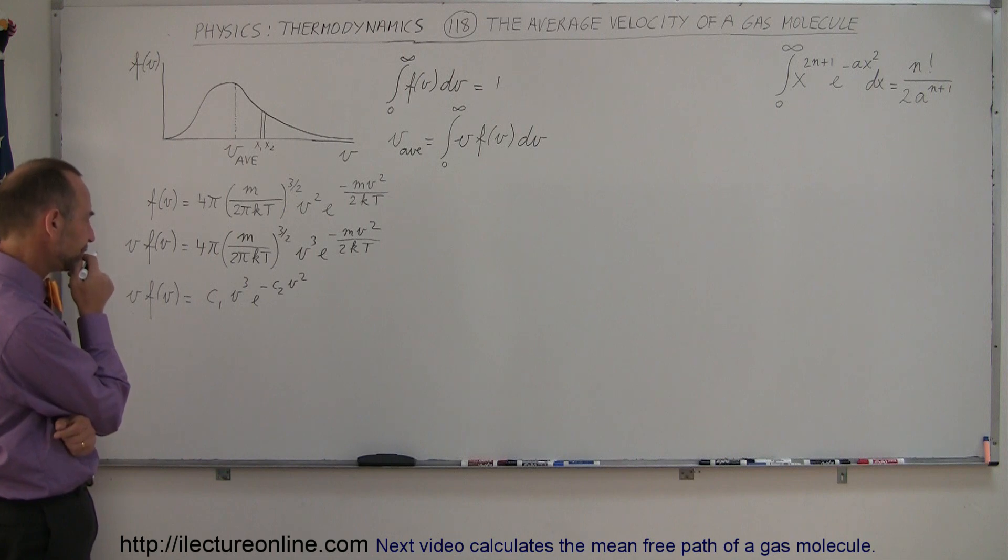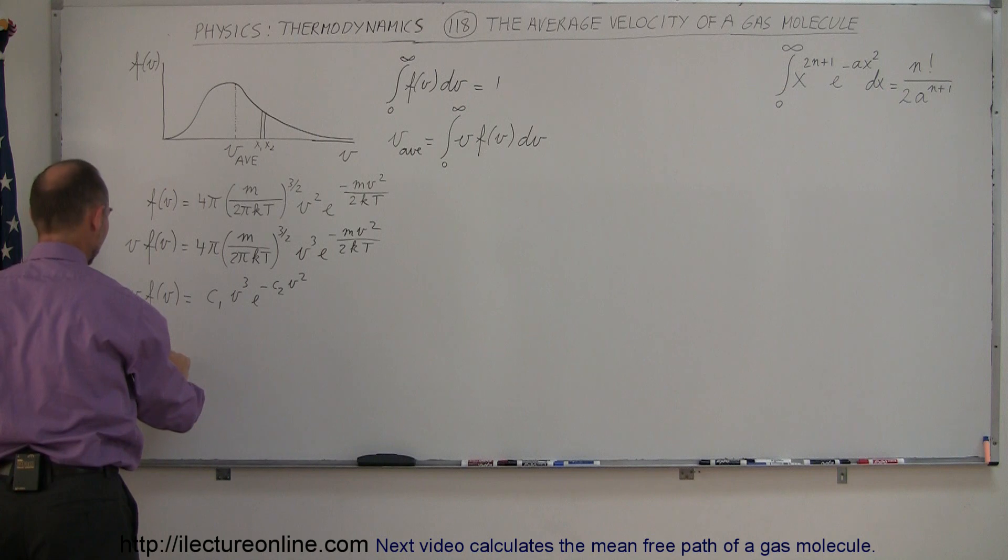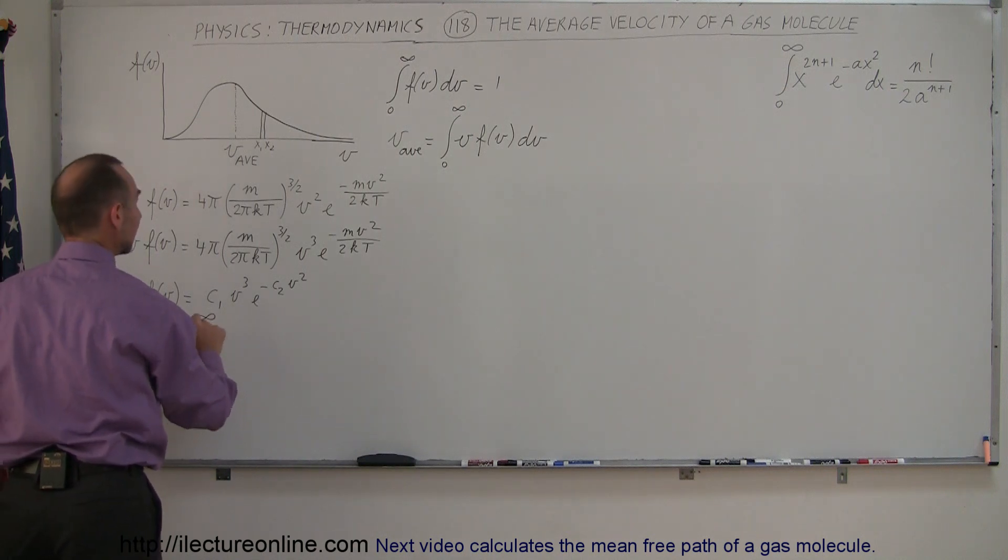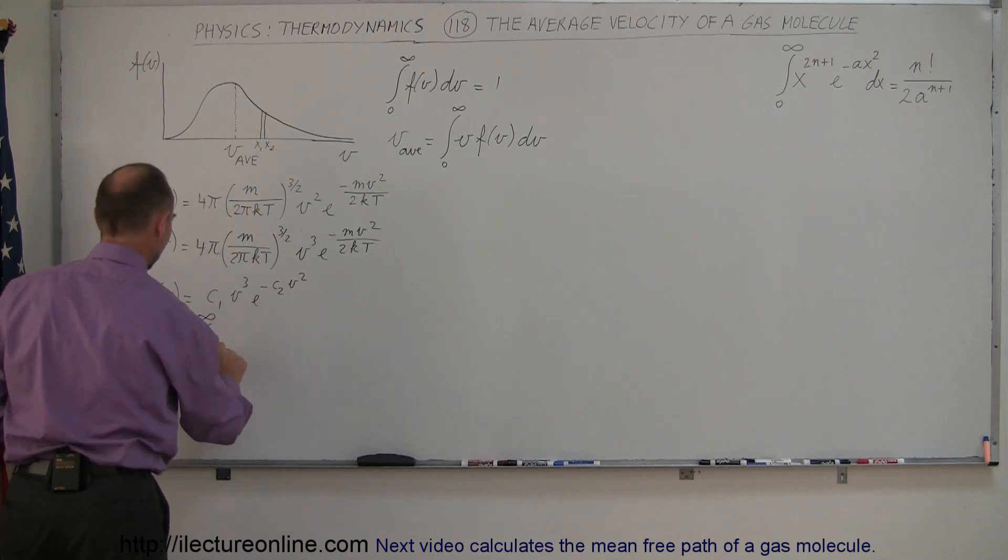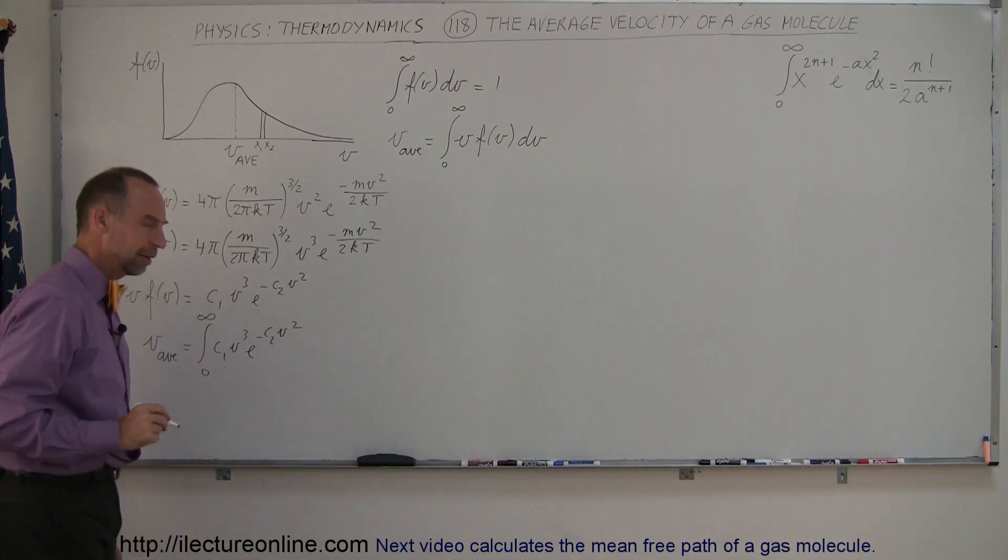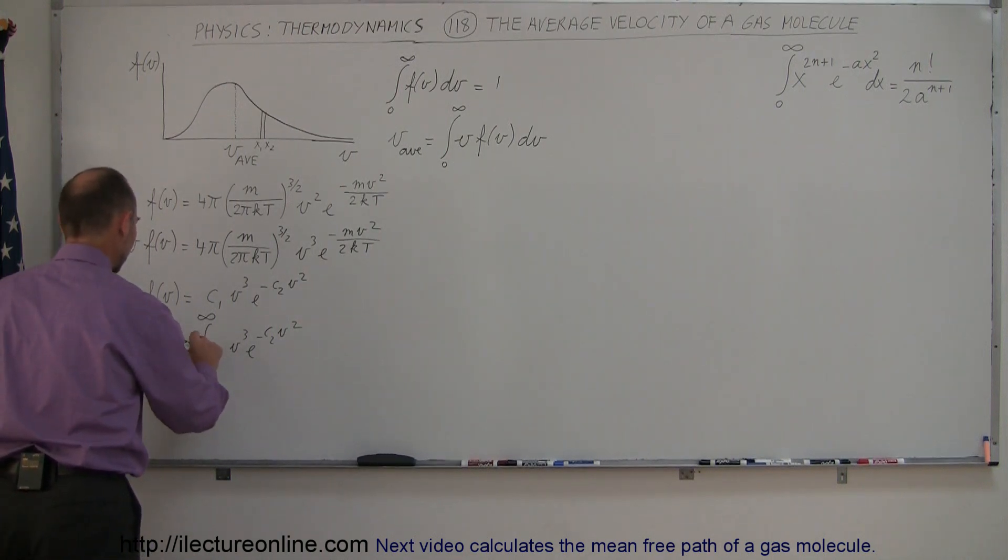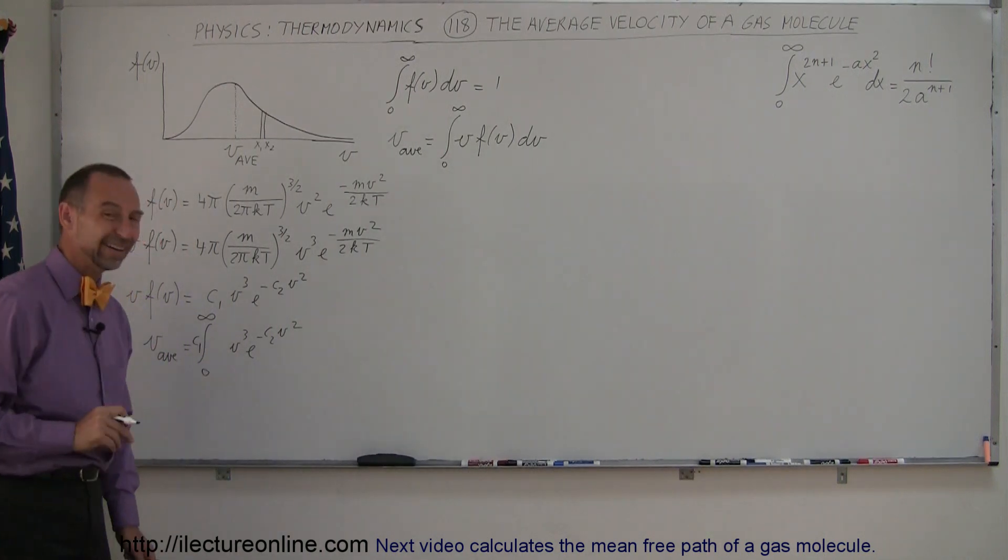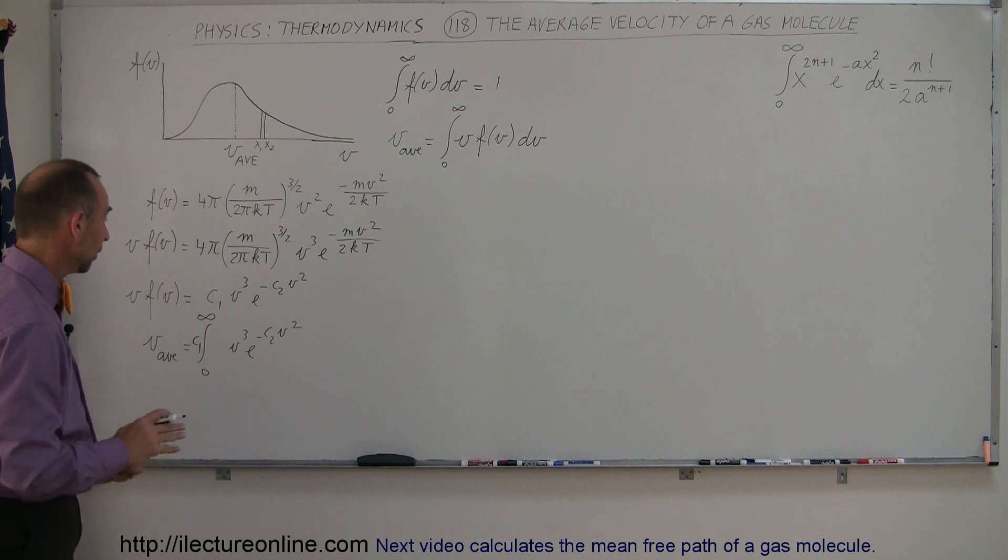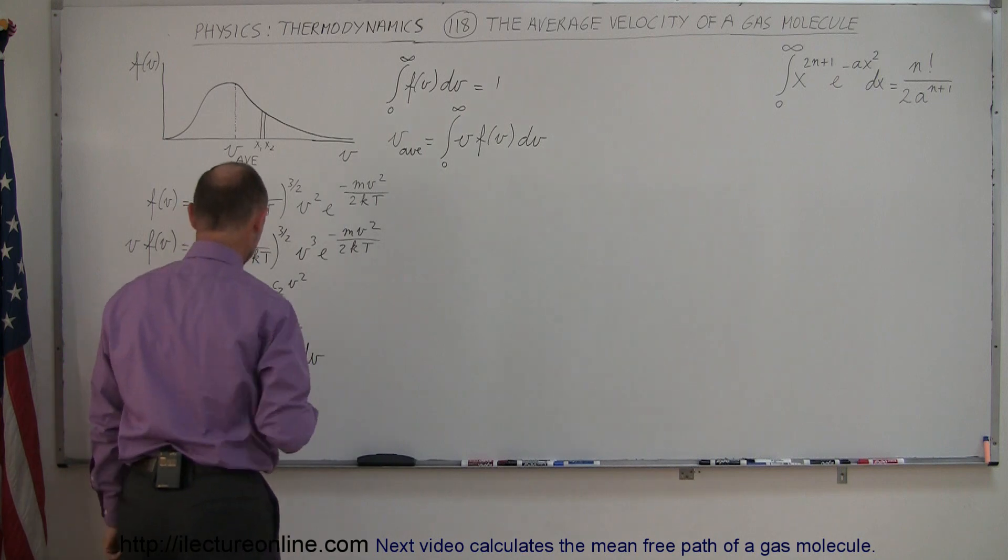Now, if we take that and we put that into the integral, we can now say that the V average is equal to the integral from 0 to infinity of this quantity right here, which is C1, V cubed, e to the minus C2, V squared. And of course, I can take the C1 and move it outside the integral sign because that's just a constant, so let me simply put it right there to make it a little bit more simple. Now, don't forget, I still need my dV, so I need to put a dV here at the end.